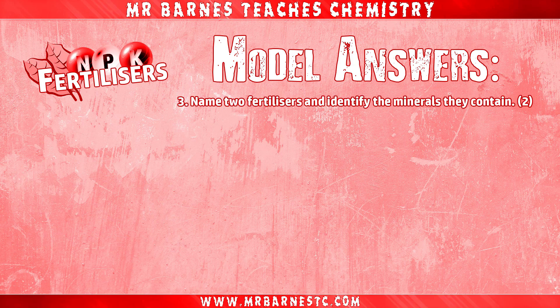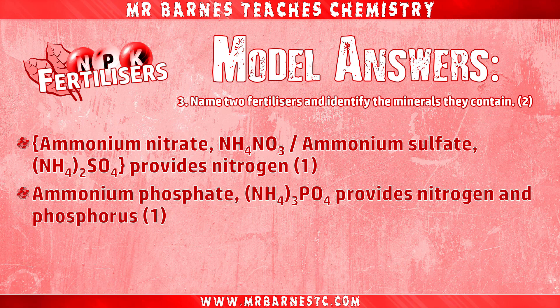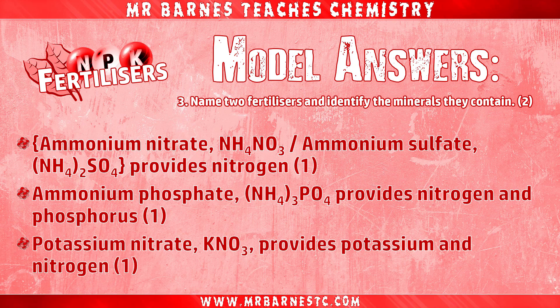And then finally, name two fertilizers and identify the minerals they contain. Ammonium nitrate and ammonium sulfate are the ones that provide only nitrogen, so you get one mark for saying either of those gives you nitrogen. The second mark is for ammonium phosphate, which gives you both nitrogen and phosphorus. And the third mark is for potassium nitrate, which gives potassium and nitrogen. Any two of those three will get you two marks.